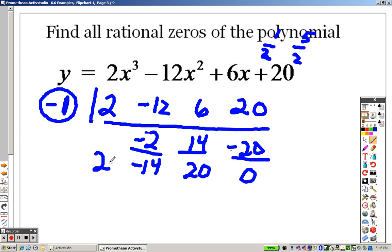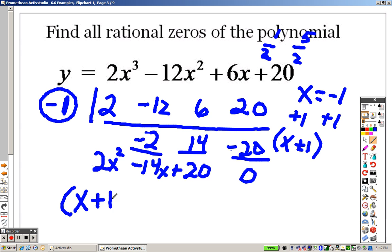So remember, when I rewrite this, this is x squared. This is negative 14x, and that's positive 20. Now, the problem is I got to see if I can keep factoring, because that negative 1, that's like saying x equals negative 1. Well, that factor, if I add 1 to both sides, the factor is actually x plus 1. That's what my factor is. So this is what I have. I actually right now have x plus 1, and I have 2x squared minus 14x plus 20.